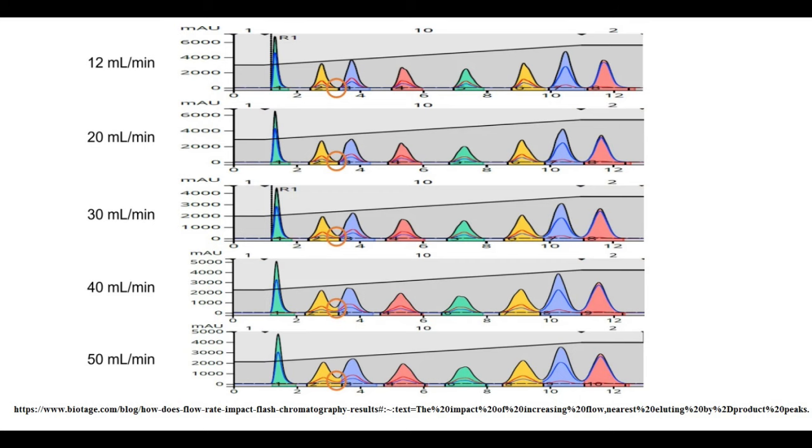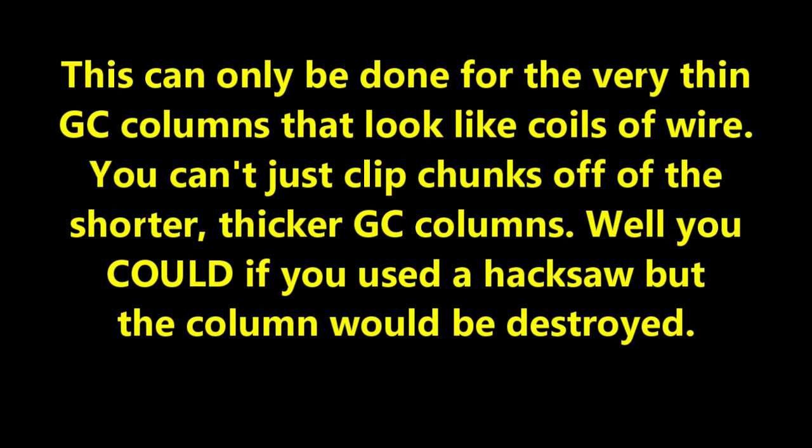In gas chromatography, this can be handled by clipping off a short section of the beginning of the column where junk will tend to be trapped. We will talk more about GC columns later in the video and I'll explain why you can just cut pieces off of them but for now, just accept that this is an easy thing to do.